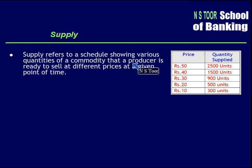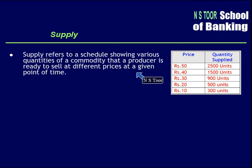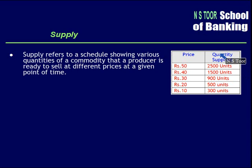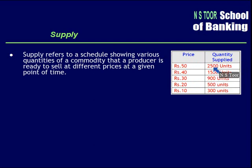Supply refers to a schedule showing various quantities of a commodity that a producer is ready to sell at different prices at a given point of time. As shown in this table, these are different prices and these are the various quantities which producers are ready to supply at various prices.